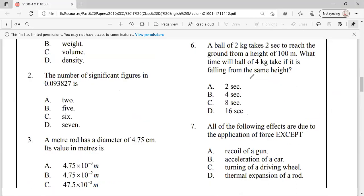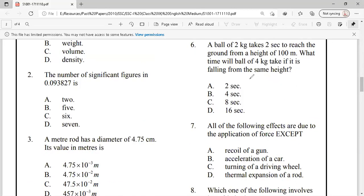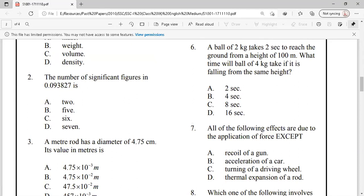Then, question number 6. A ball of 2 kg takes 2 seconds to reach the ground from height of 100 meters. What time will be taken by the body of 4 kg to fall from the same height? According to Galileo and in the absence of air resistance, everybody, whatever its mass is, falls the same height in the same time.